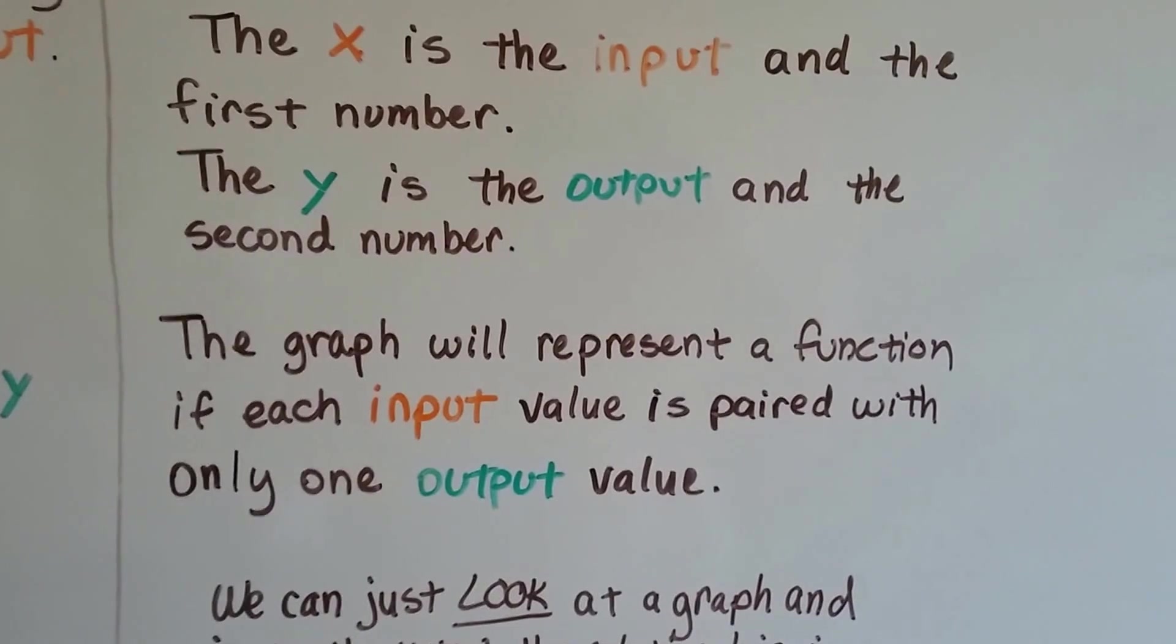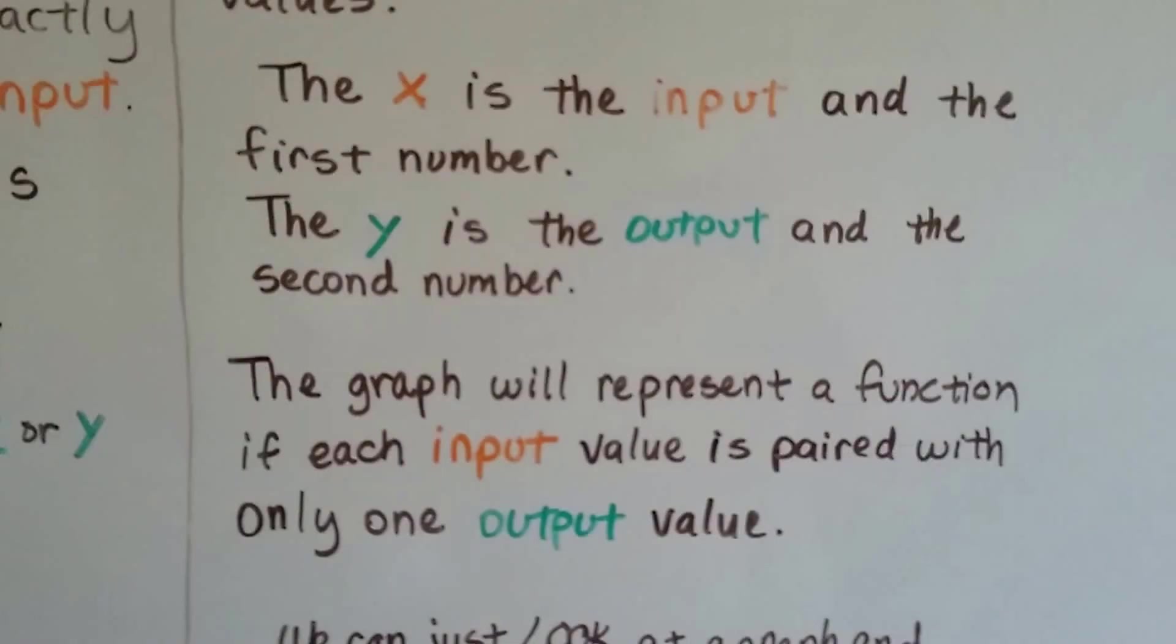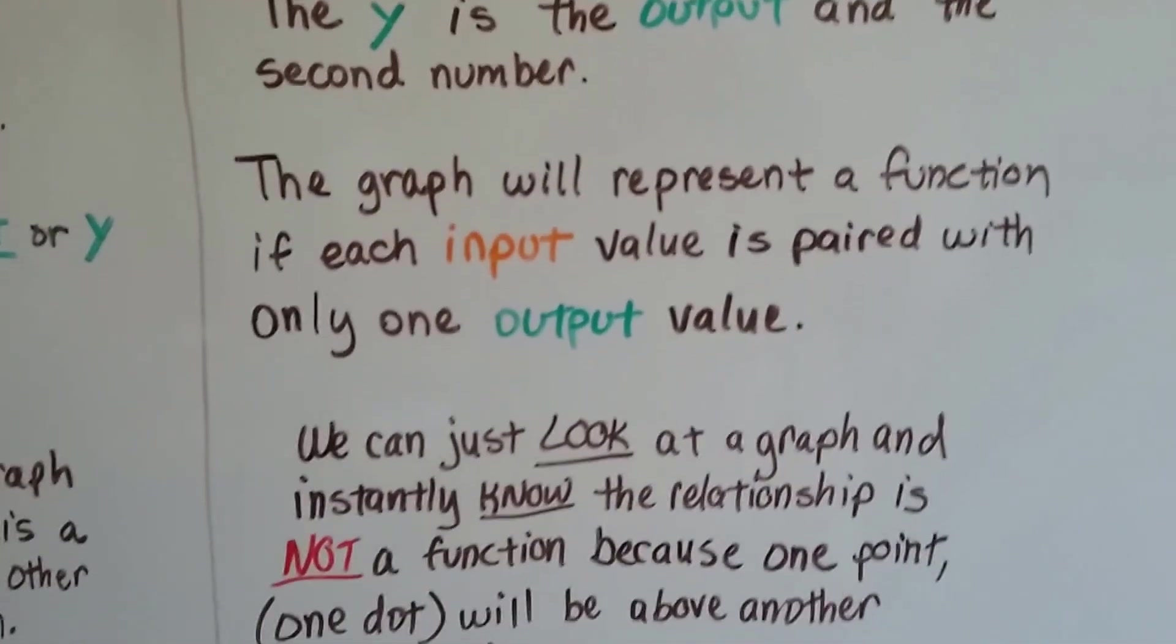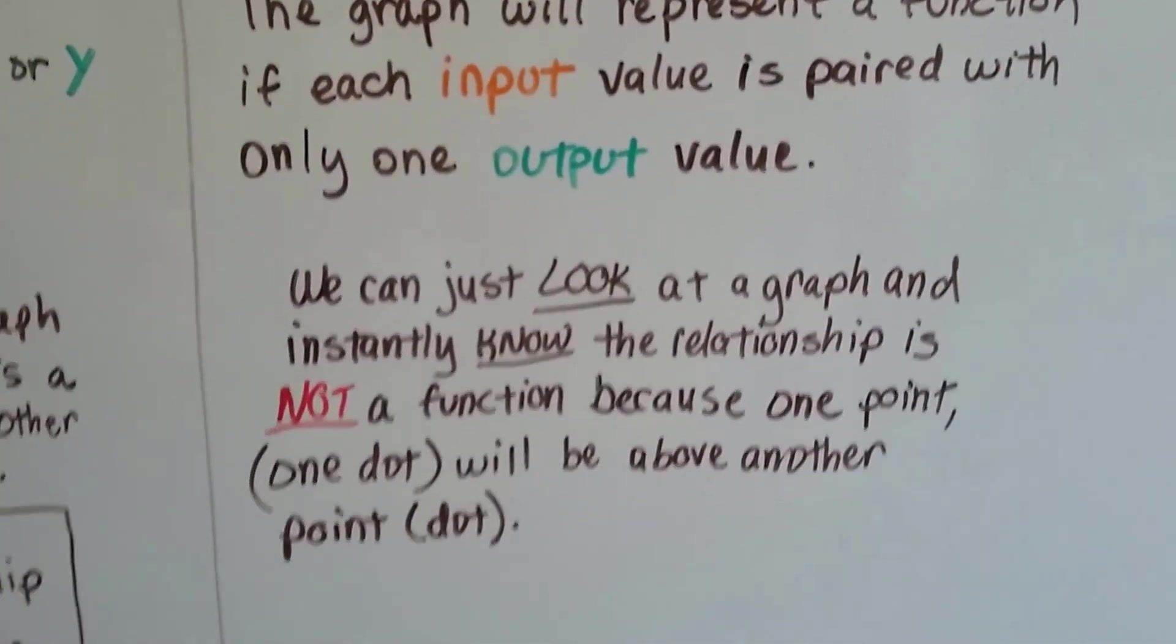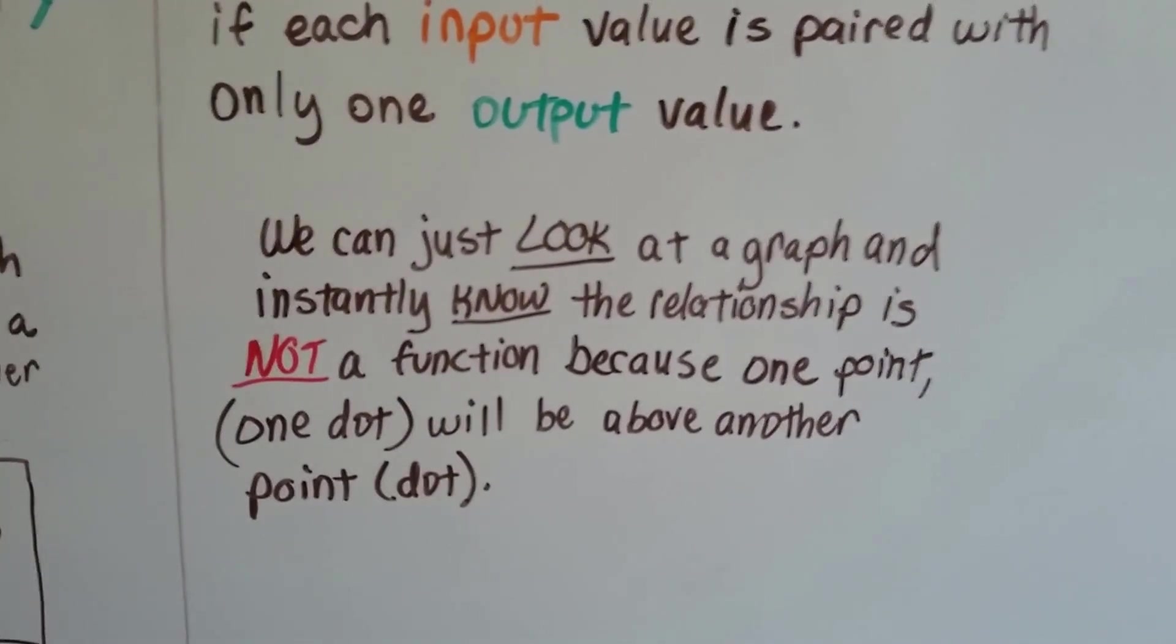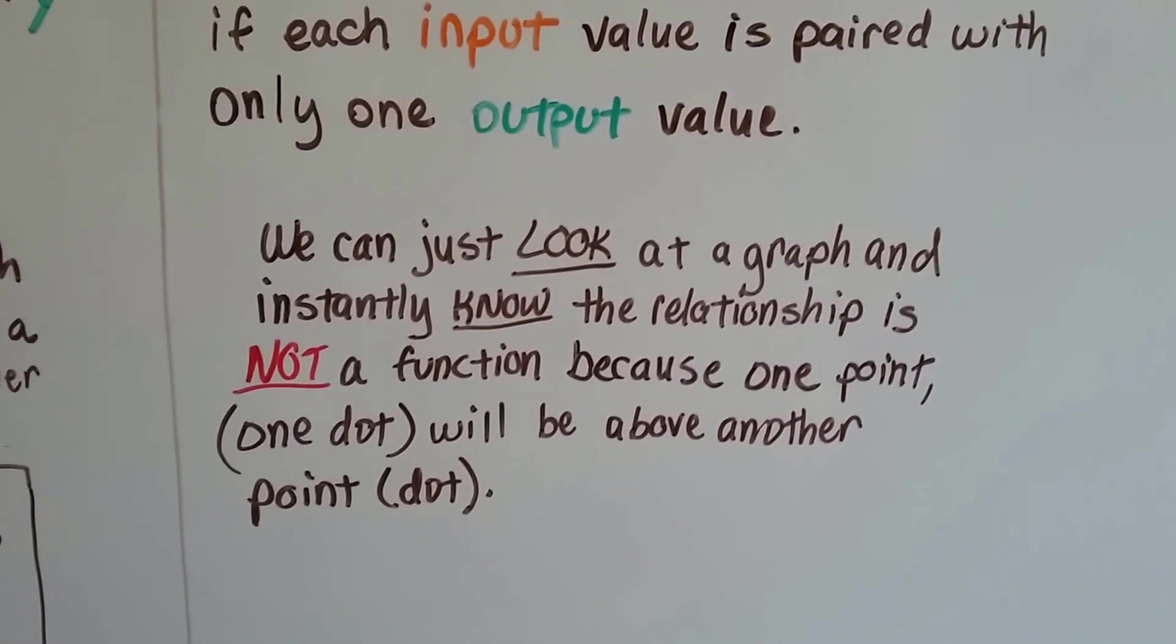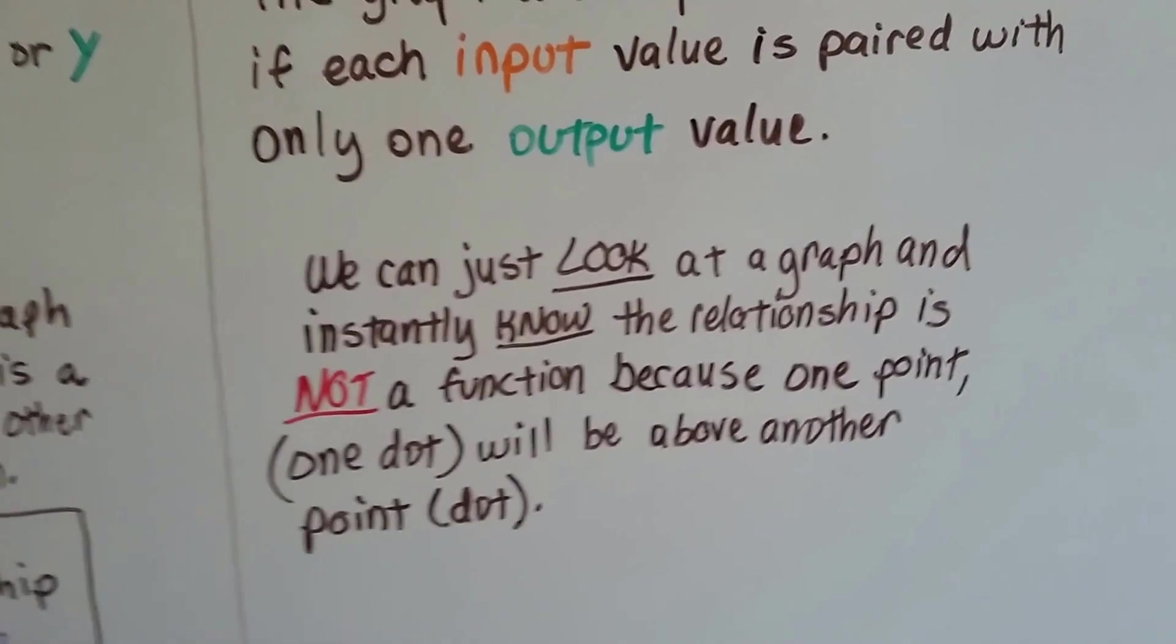The graph will represent a function if each input value is paired with only one output value. Now, I think graphs are the easiest way to see if something's a function or not. Because we can just look at a graph and instantly know the relationship is not a function, because one point, one dot, will be right above the other point, another dot.